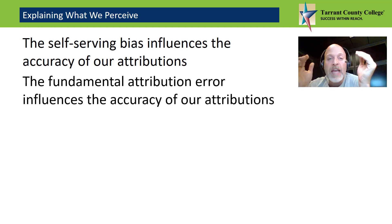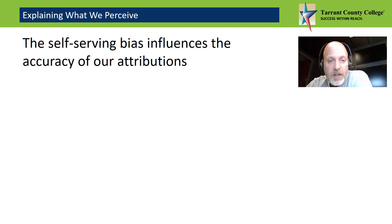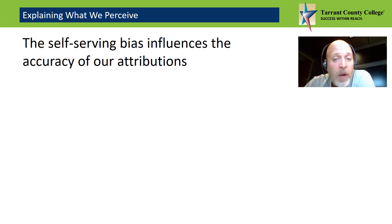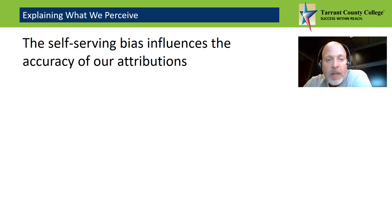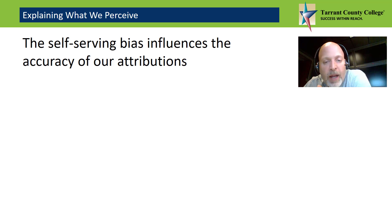The self-serving bias refers to our tendency to attribute our success to stable internal causes while attributing our failures to unstable external causes. If I get in a car wreck, I never say I'm a terrible driver — it's because it was raining. For example, if you get an A on a test, you did so because you're smart. But if you got an F, it's because the test was unfair, or you had to work late the night before, or the professor was a jerk.